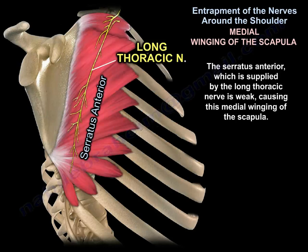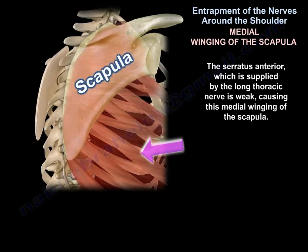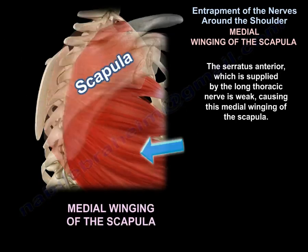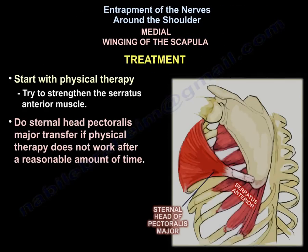The serratus anterior, supplied by the long thoracic nerve, is weak, causing medial winging of the scapula. Treatment starts with physiotherapy to strengthen the serratus anterior muscle. External head pectoralis major transfer can be done if physiotherapy doesn't work after a reasonable amount of time.